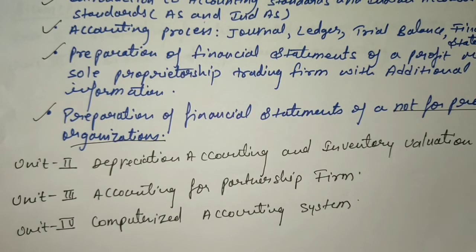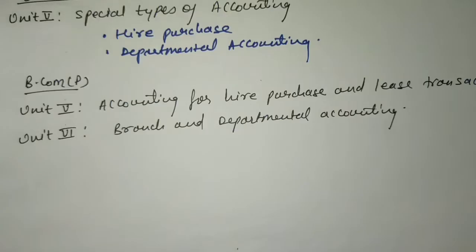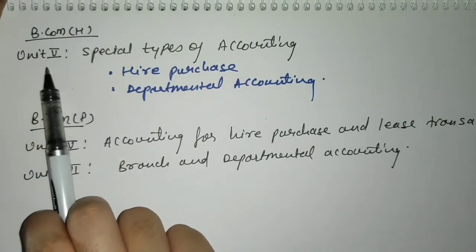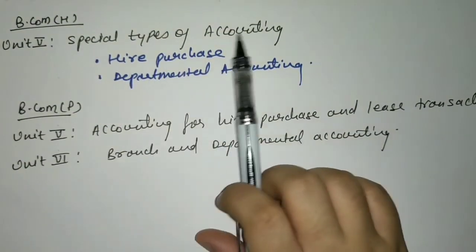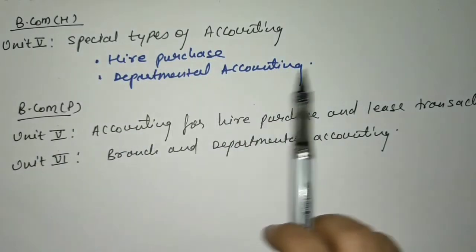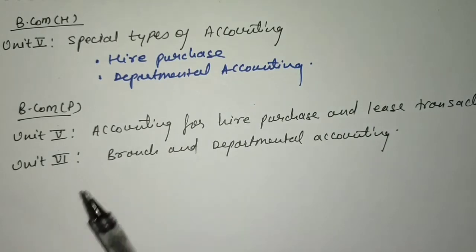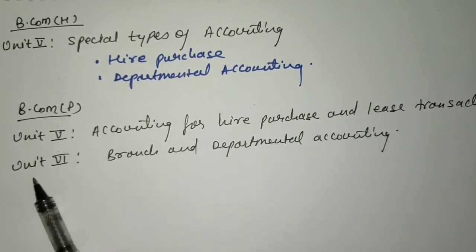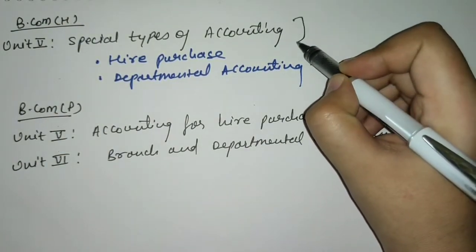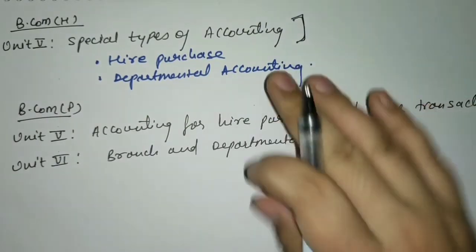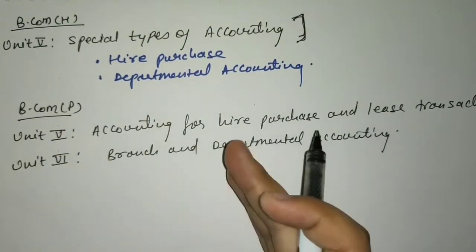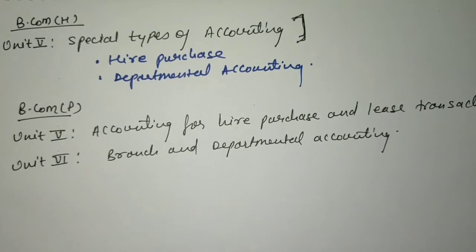So 4 units are exactly the same. Now, looking at the next unit: in BCom Honors, Unit 5 covers special types of accounting — hire purchase and departmental accounting. But in BCom Program, it is accounting for hire purchase and lease transactions, and Unit 6 is branch and departmental accounting. The only difference is that BCom Honors has this content in one unit, while BCom Program splits it into two units.